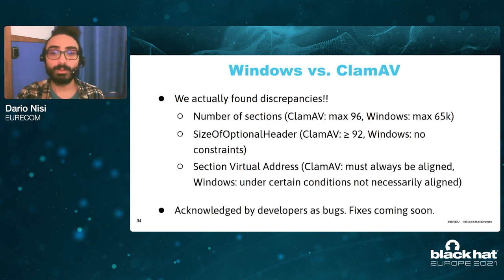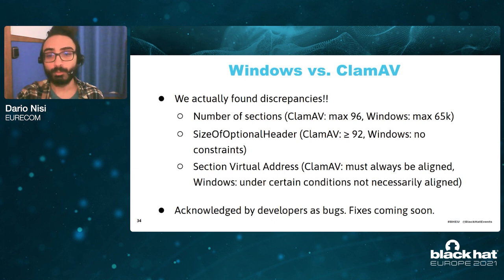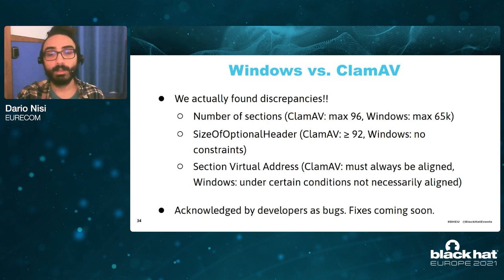Our tool also found discrepancies between Windows and ClamAV — we found three of them in particular. One important one is about the number of sections: ClamAV expects the file to have at most 96 sections, while Windows does not really have this constraint. All three discrepancies were acknowledged by the developers of ClamAV as bugs, and they are working on some fixes.